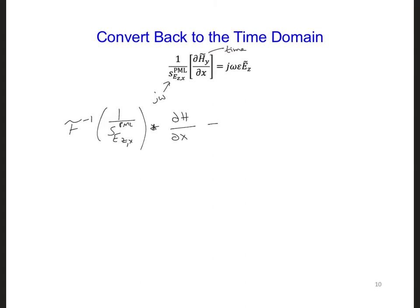And on the right side, the j omega term turns back into a partial time derivative, so epsilon d ez d t.